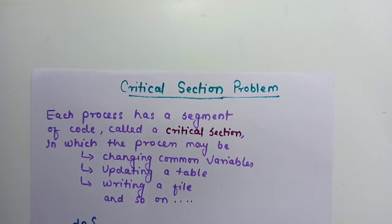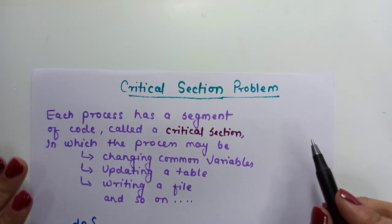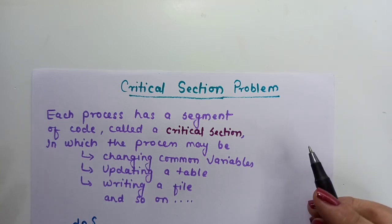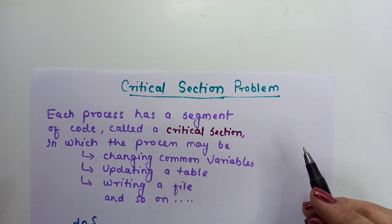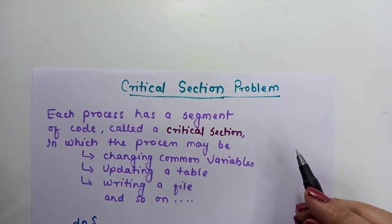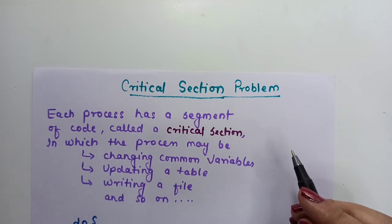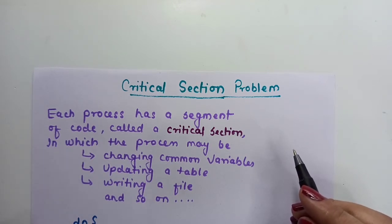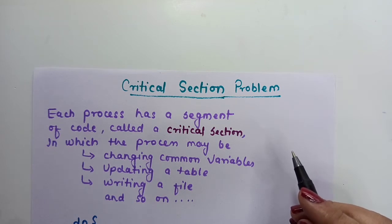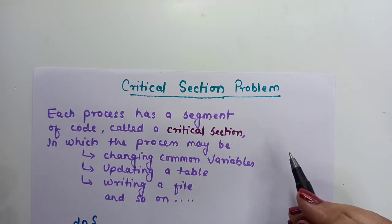So what is the critical section problem? As we understood with race conditions, when two cooperating processes share some memory variable or resources with each other and want to access and manipulate that data concurrently or simultaneously, it will lead to inconsistent results — and that is what we don't want.